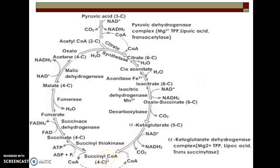Succinyl-CoA is converted into succinic acid, and succinic acid is converted into fumaric acid, and then into malic acid — or in other words, malate — with the help of enzyme fumarase. This malic acid is converted into oxaloacetate, and this oxaloacetate then again enters into the next cycle, and this way the Krebs cycle continues.